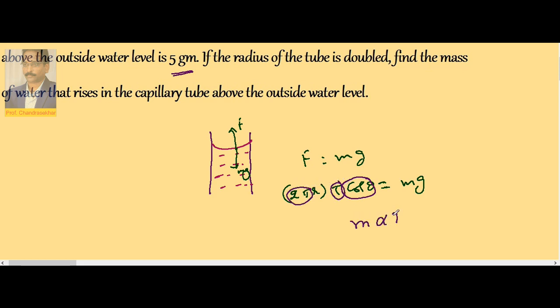So M is directly proportional to r. As the radius is doubled, automatically mass is doubled.